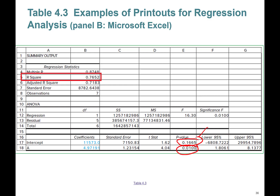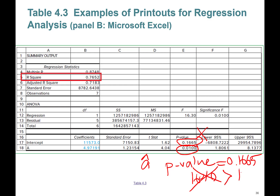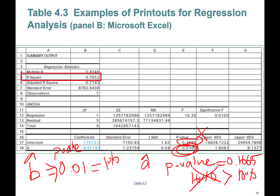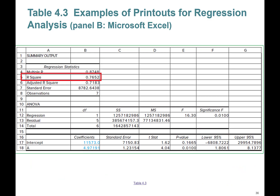For instance, the intercept A-hat is not statistically significant because its p-value is 0.1665 — that is significant at 16%, which is greater than 10%, so we say it is not significant. Now look at beta-hat: its p-value is 0.01, so it is statistically significant at exactly the 1% level.